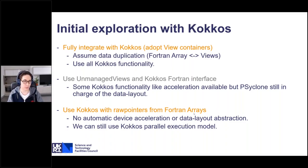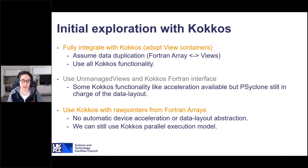On the opposite end of the spectrum, a second approach is to not let Kokkos use its own data structures, but instead let Kokkos work with raw pointers that are on top of — or are the same data as — the Fortran arrays. With this we can still use parts of Kokkos, especially the parallel execution model, but we lose some nice features like data-layout abstraction and automatic device acceleration. There is also a middle option where we remain in charge of the data layout but make their Views overlap with this data — I have not yet explored this middle option.